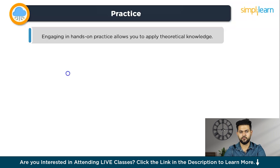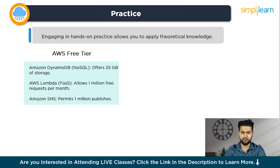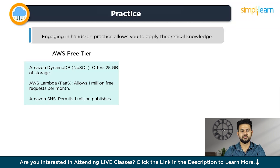Here's the breakdown. First, we have the AWS Free Tier. AWS free services include Amazon DynamoDB (NoSQL), which offers 25 GB of storage; AWS Lambda, which allows 1 million free requests per month; and Amazon SNS, which permits 1 million publishers. In addition, there are complementary tiers for various other services such as EC2, S3, and RDS, each with usage limits and specified durations.